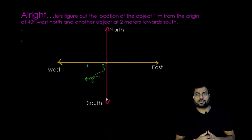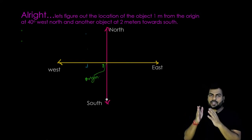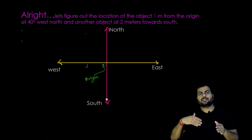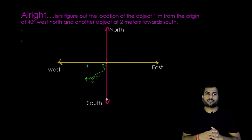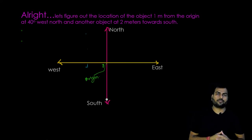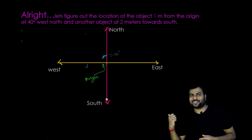Okay, so now let's figure out the location of the object which is one meter away from the origin at 40 degree west north and another object which is two meters towards south. Let's pause the video and try to locate the object location. Alright, so here is the solution.